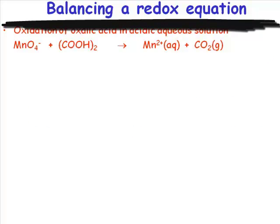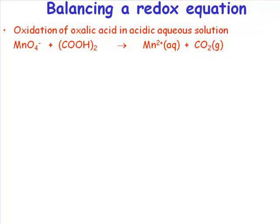Balancing a redox equation. What equation are we going to balance? We're going to balance this one: permanganate anion plus oxalic acid (or diethanoic acid) goes to manganese 2+ and carbon dioxide. Here we have an example of a redox equation.